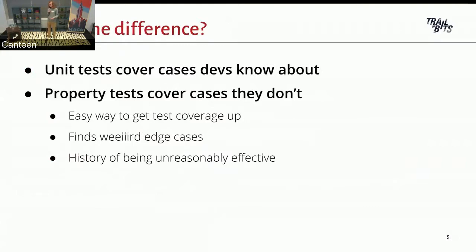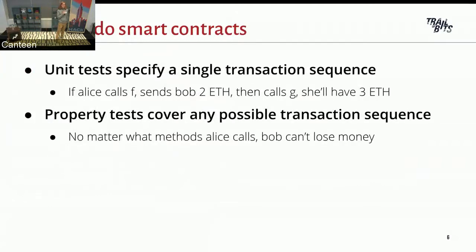When we talk about this specifically on Solidity, what we say is that instead of unit tests, which specify one sequence of transactions and interactions with a contract, we say that for any possible sequence of transactions. Instead of that approve, then transferFrom, then whatever, we say that no matter what transactions you call in what order, you should never lose money from your contract. Or you should never have the contract self-destruct. Or this is protected, so you should never be able to change the owner unless whatever.